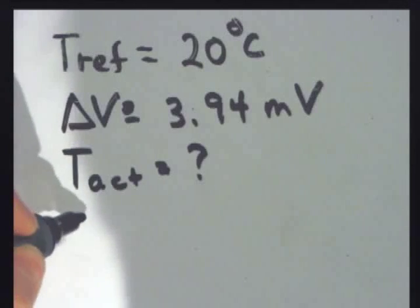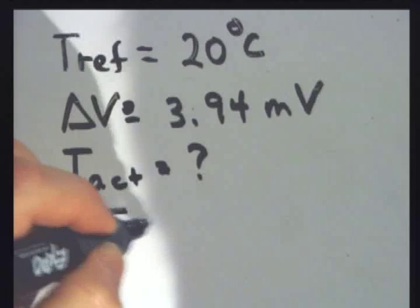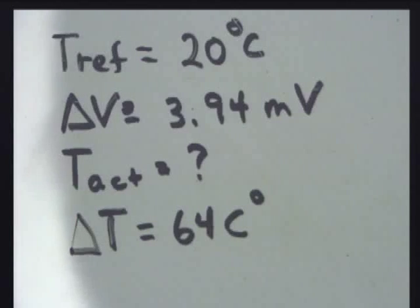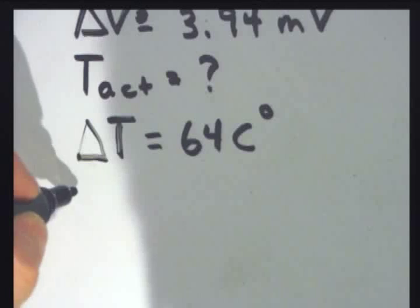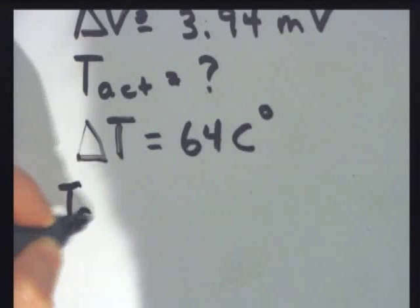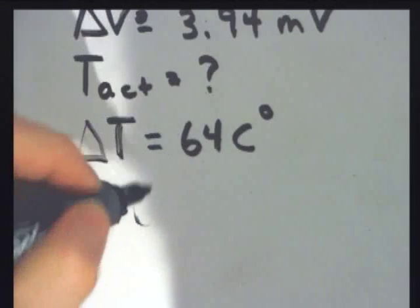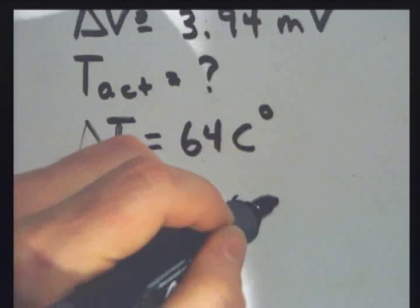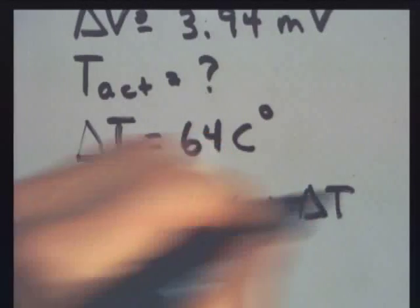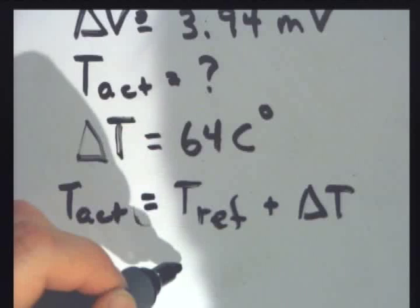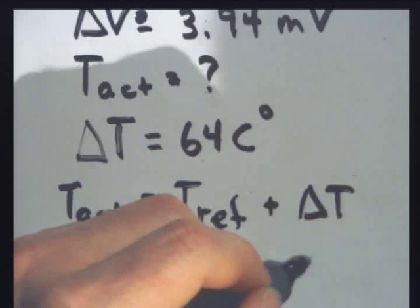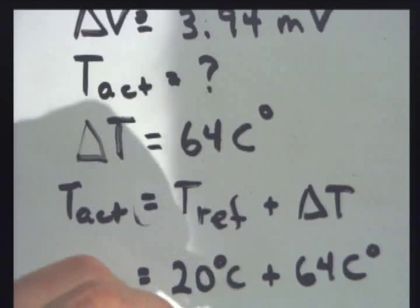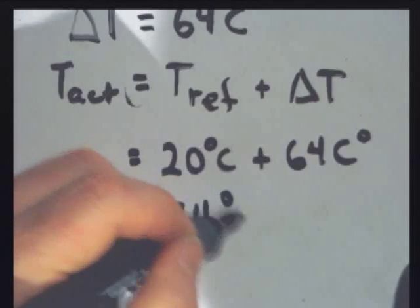So we'll say temperature difference here is equal to 64 Celsius degrees. Now I can write the equation. The actual temperature is equal to the reference temperature here, plus the temperature difference, which is, the reference was 20 degrees Celsius. My temperature difference is 64 Celsius degrees. And that gives me 84, an actual temperature of 84 degrees Celsius.